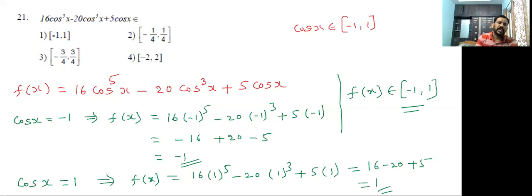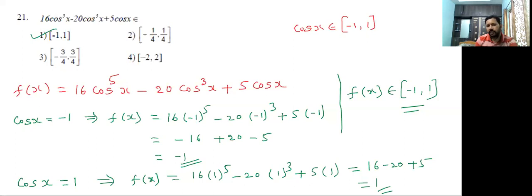So finally, the range of the function is closed interval [-1, 1] only. The first option is correct. The reason we take cos x values is that this is a polynomial in cos x. That's why we take the minimum and maximum values of cos x to get the minimum and maximum values of f(x).